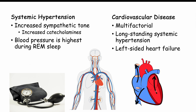Eventually the left ventricle will fail, and less blood will be pumped into the systemic circulation. Blood then backs up from the left ventricle into the left atrium and into the pulmonary system, increasing pulmonary pressures. That causes the right ventricle to pump harder against those pulmonary pressures, eventually leading to right ventricular hypertrophy and right-sided heart failure.